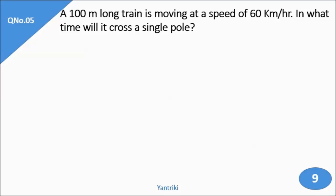So, very simple: a 100-meter long train is moving at a speed of 60 km per hour. In what time will it cross a single pole? This is a single pole question — you will get a lot of questions like this. A length of 100 meters is given, and the speed is 60 km per hour. I will convert 60 km per hour since the answer is required in seconds.